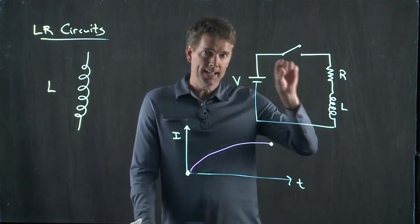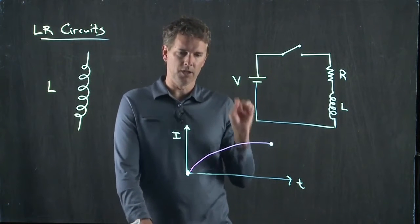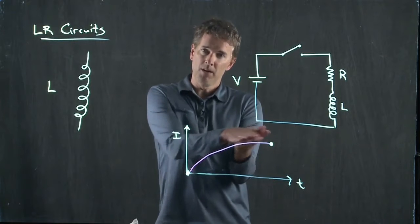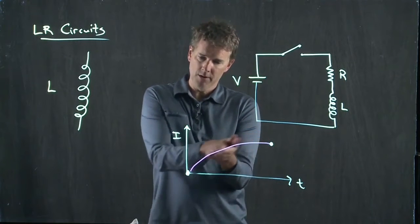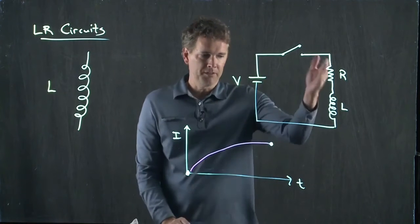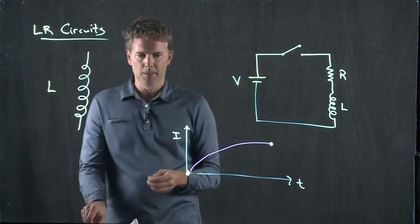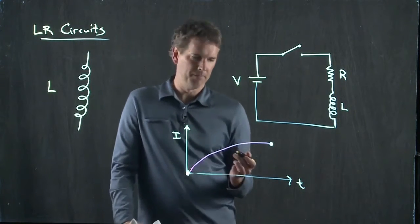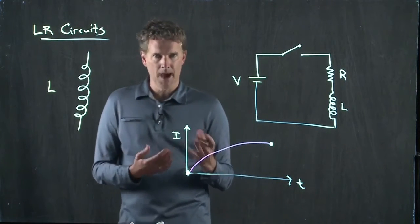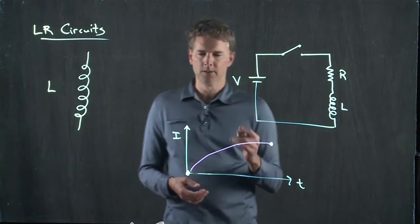Remember, the inductor doesn't like changes in current. Okay? So there's going to be some strong behavior of the current as a function of time. The resistor is ultimately going to limit how much current can go through the system, and this is a curve that you end up with. And now, you can probably map out what this is going to look like.